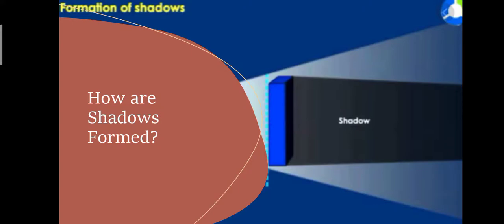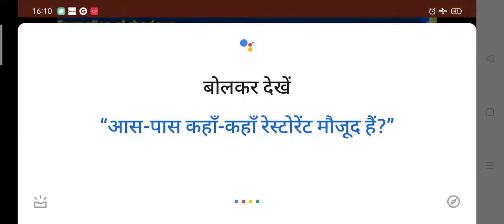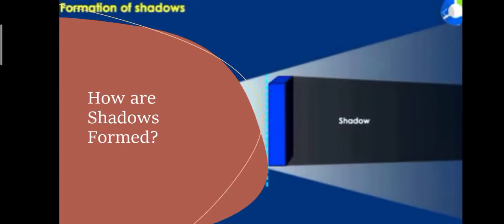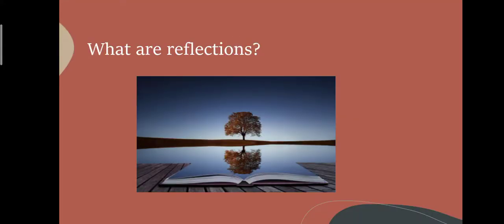Now, how are shadows formed? We have learned that opaque objects don't allow light to pass. If there are sun rays and an opaque object is in the way, light will reach every other place but the opaque object will block it. The area behind it will be dark, and that darkness is called a shadow.